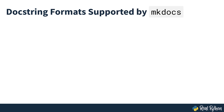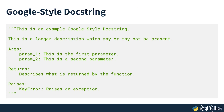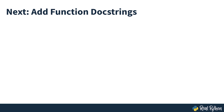mkdocs supports three common types of Python docstring formats: Google-style docstrings, the NumPy docstring standard, and the Sphinx docstring format. The Python handler for mkdocstrings uses Google-style docstrings by default, an example of which is seen on screen. The docstring should start with a one-line summary, then have sections for a longer description if needed, followed by arguments, return values, and relevant exceptions that the function may raise. You'll stick with Google-style docstrings for this course, and in the next section, you'll add docstrings to your functions.